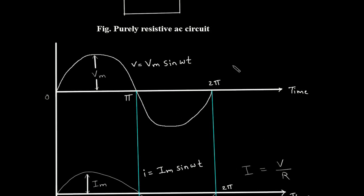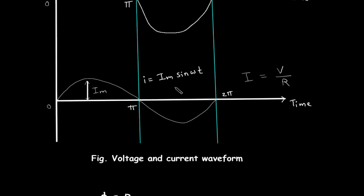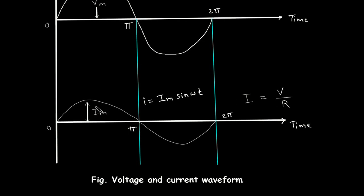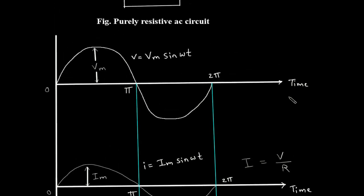Here we can see this is a voltage waveform of this circuit and this is a current waveform of that circuit. On the horizontal axis, this is the time. Here we can see this is the maximum value of voltage, it is Vm — we can also say it is the amplitude. So this waveform is for the equation V is equal to Vm sin omega t. Here we can see the amplitude of Vm is greater than the amplitude of Im. That is because current I is equal to V by R, which is according to Ohm's law — the current is equal to voltage divided by resistance. So the current will always be smaller than voltage because it gets divided by resistance.